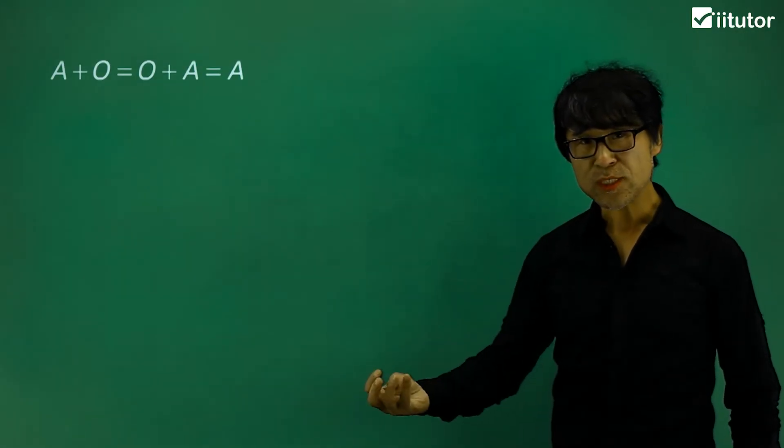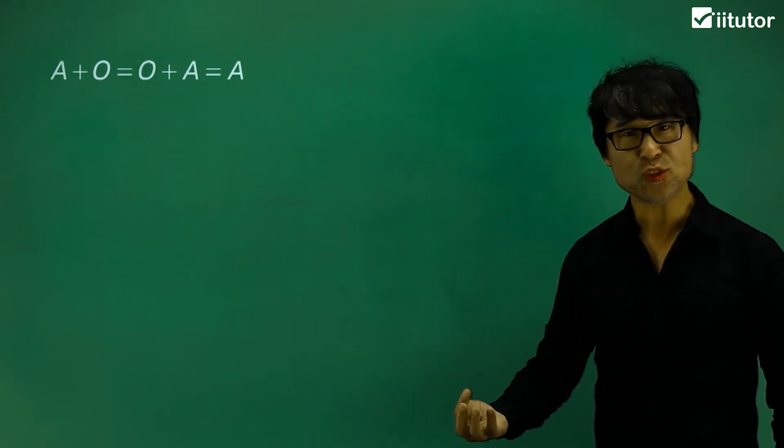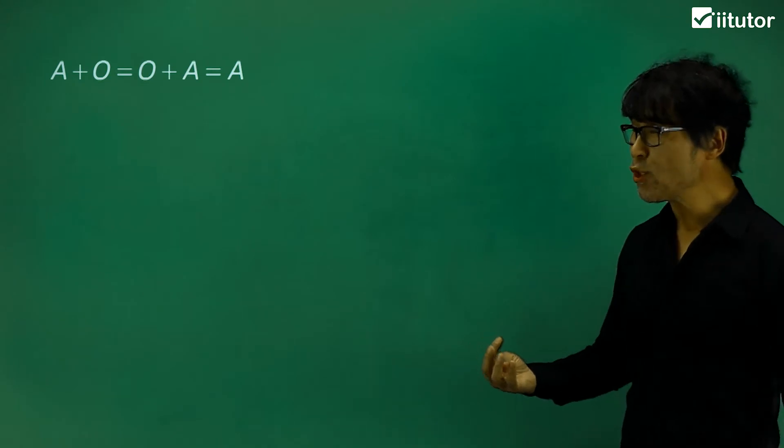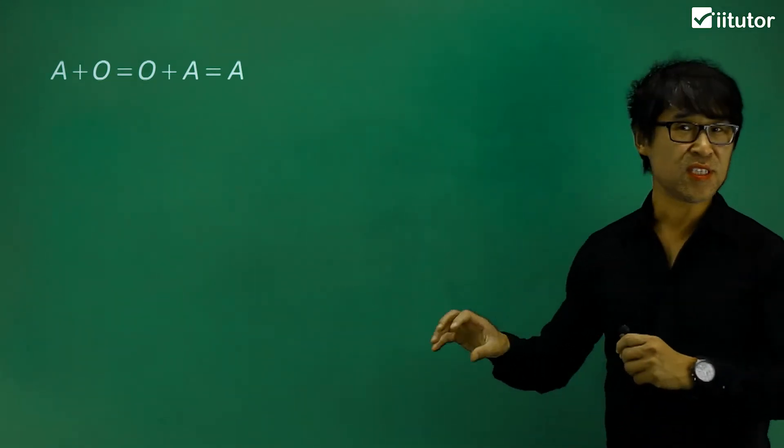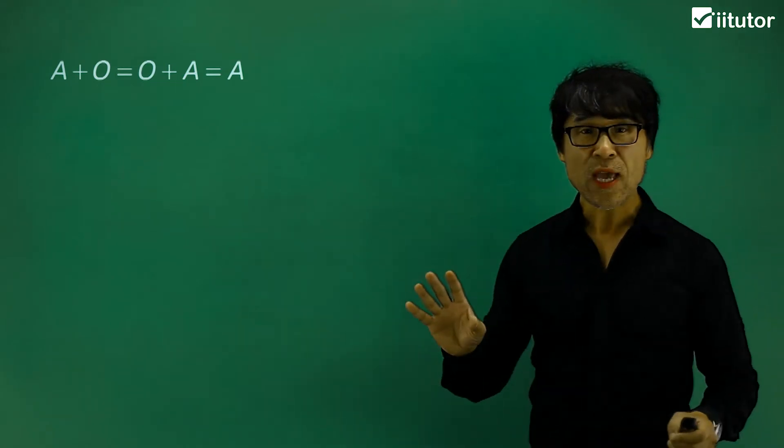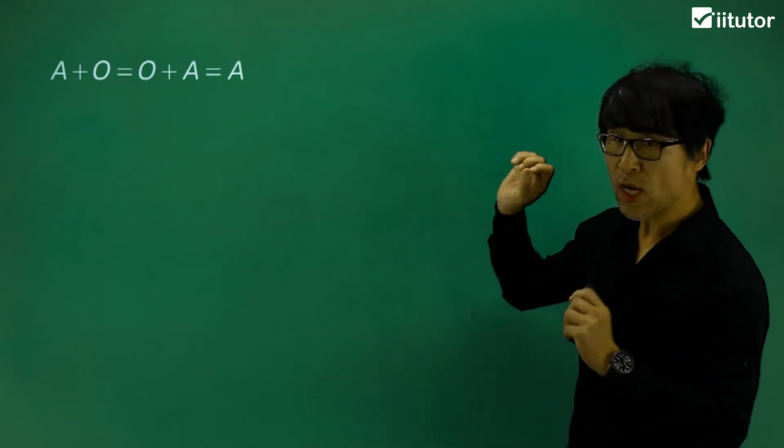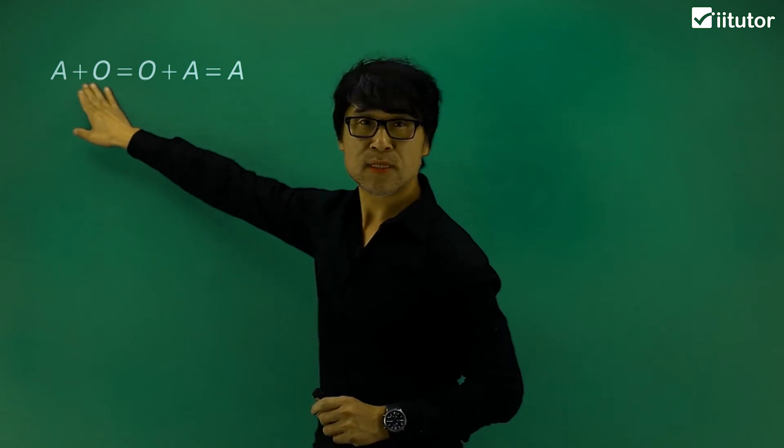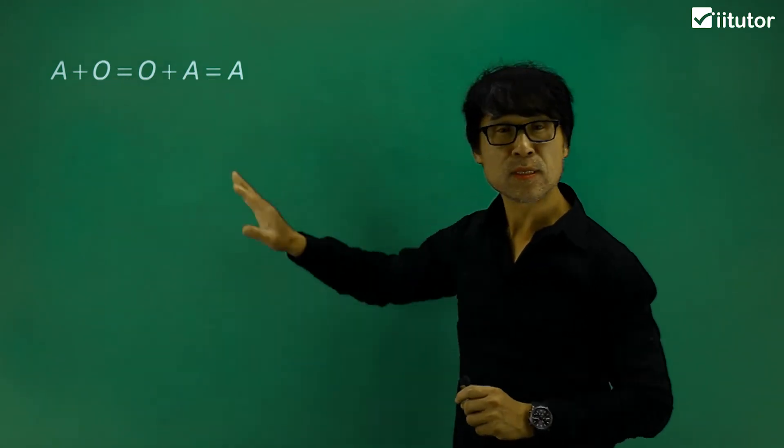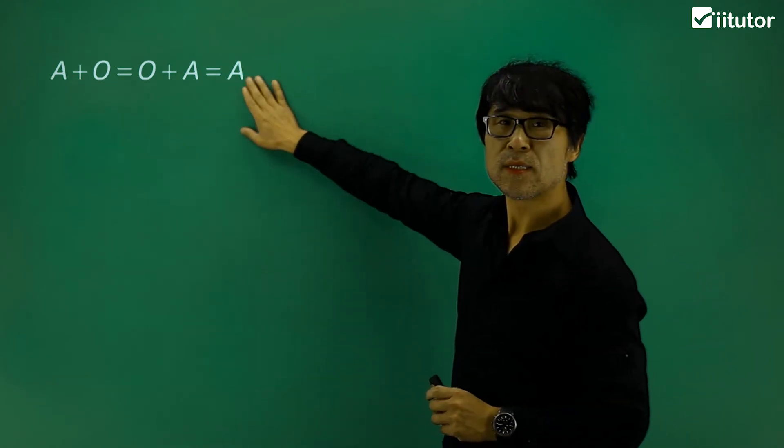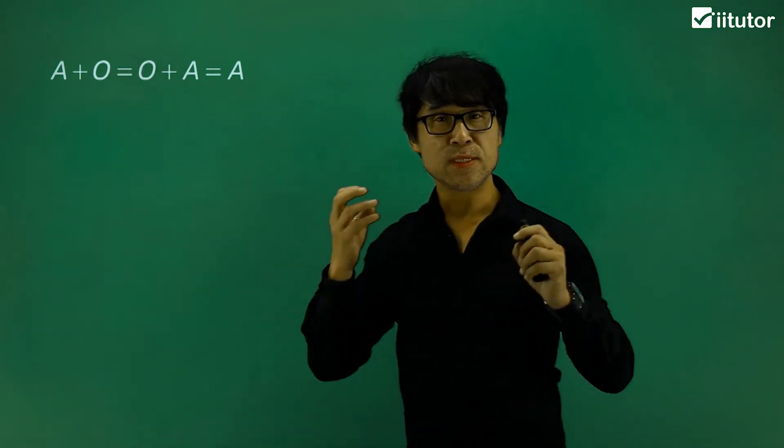Zero matrix or null matrix. So matrix is behaving similar to numbers, like this one. If you have any kind of numeric or algebra, say A plus zero is equal to zero plus A is equal to A. Or we can simply call them as zero.